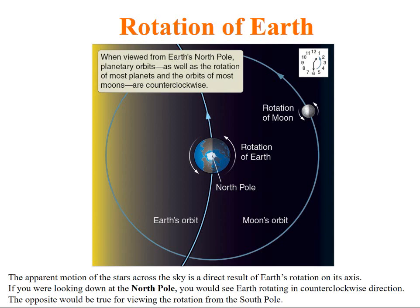Let us discuss the rotation of Earth. When viewed from Earth's north pole, planetary orbits as well as the rotation of most planets and orbits of most moons are counterclockwise. A very important point to remember. The apparent motion of stars across the sky is the result of Earth's rotation on its axis. If we look down at the north pole, you will see Earth rotating in counterclockwise direction. The opposite would be true if we are viewing from the south pole.